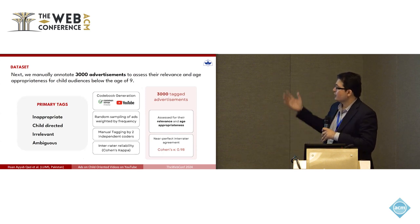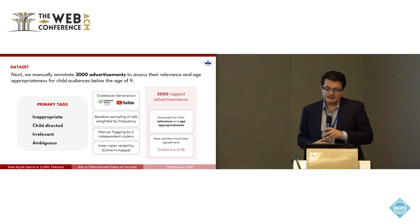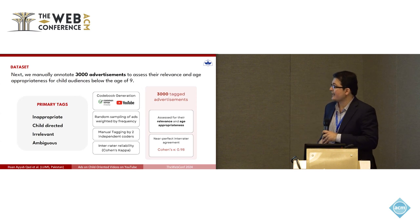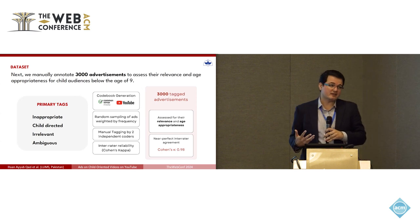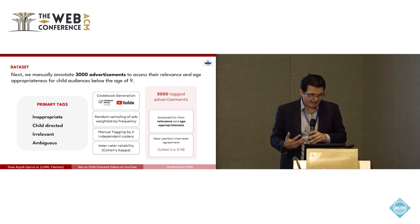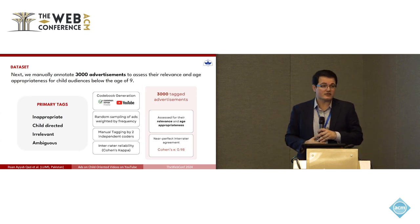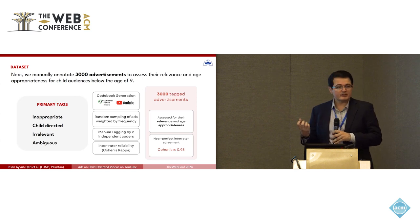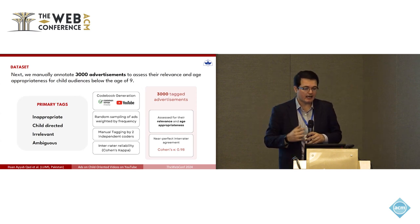We used four primary annotation tags: inappropriate, child-directed, irrelevant, and ambiguous. We generated the codebook using YouTube's guidelines and Common Sense Media guidelines, then had two independent coders manually tag each ad. We computed inter-rater reliability agreement, which came out to 0.98 — a very high score.